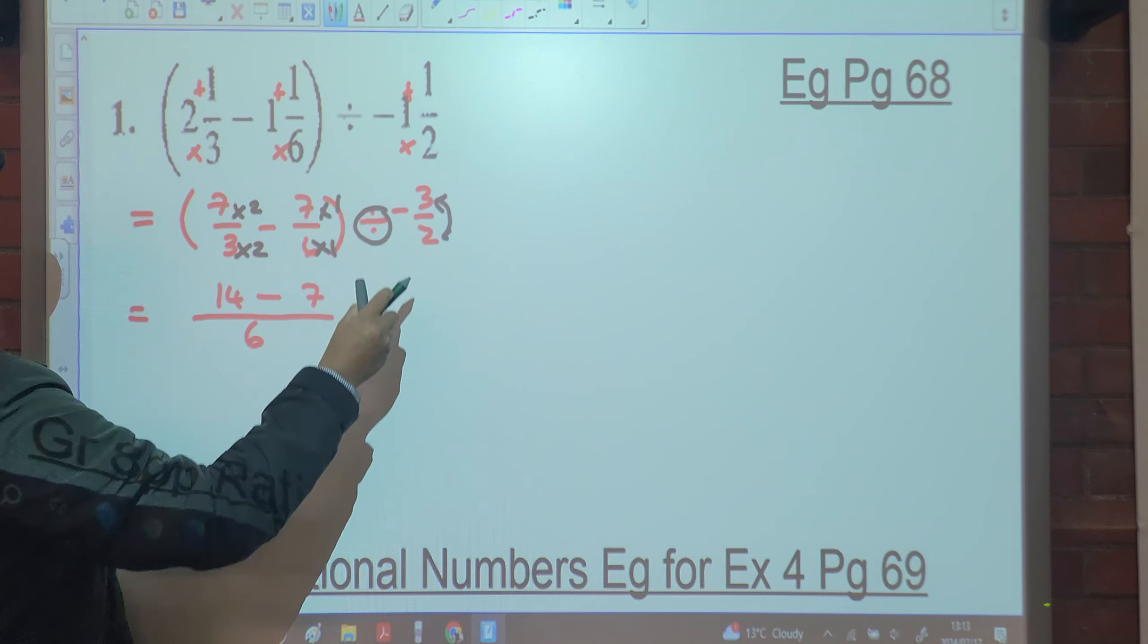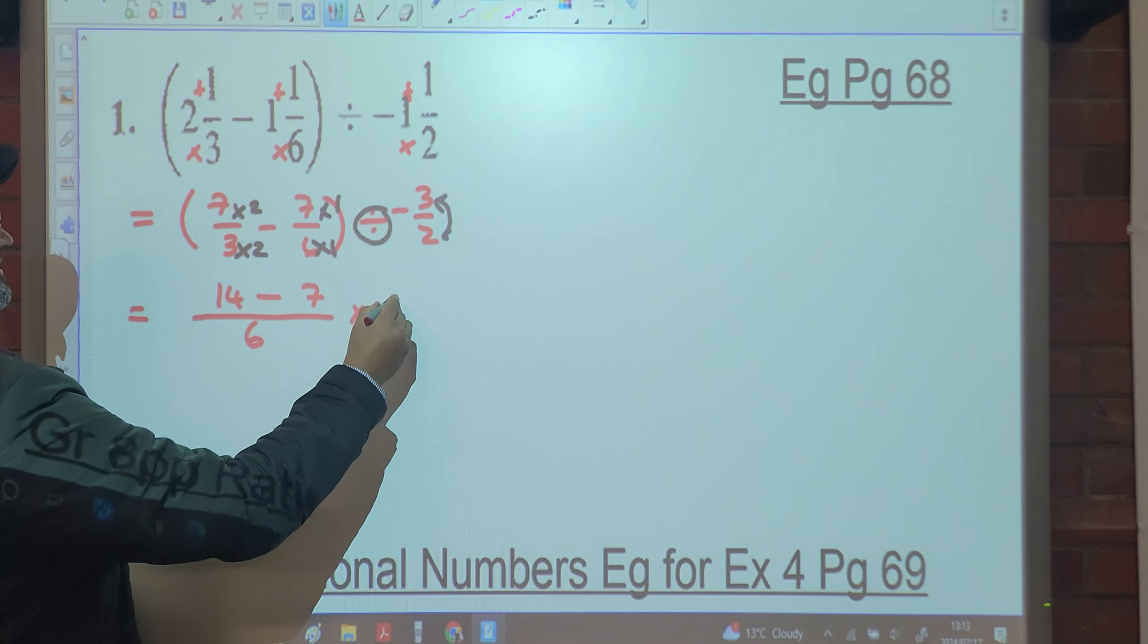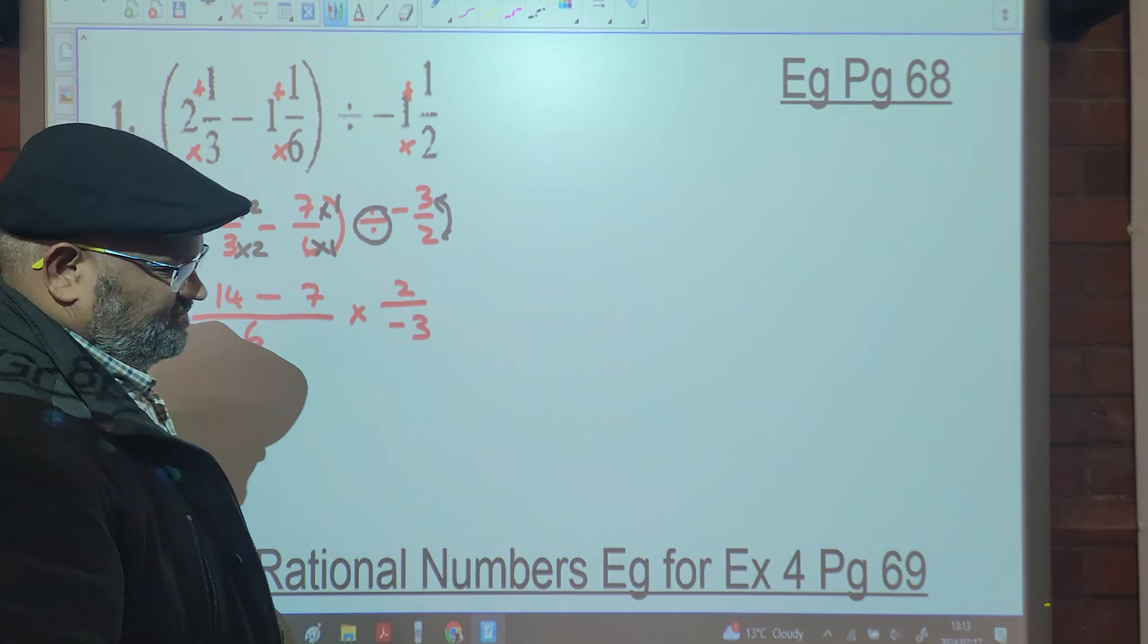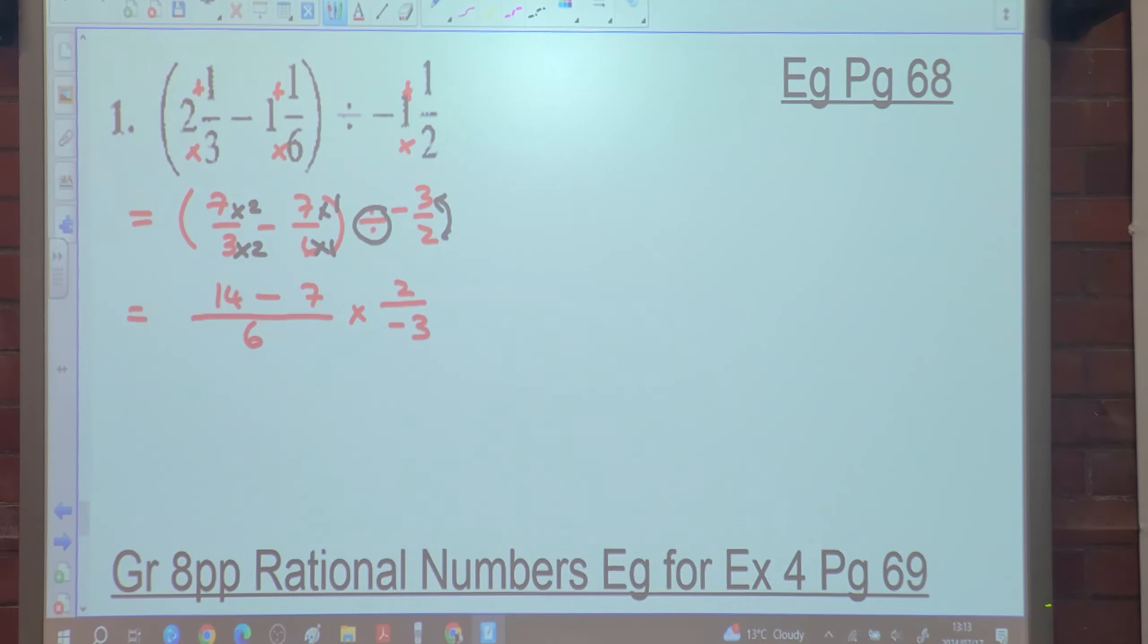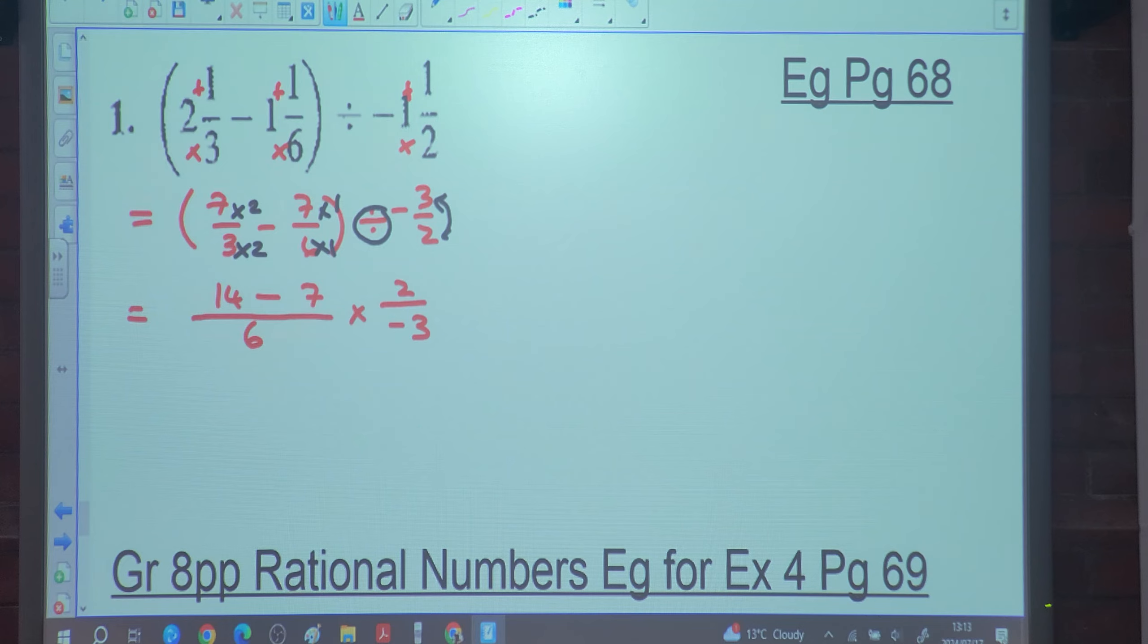The second change to multiplication. It's multiplied by two over negative three. Do you all agree with that? Yes, sir. Is there any confusion there? No, sir.